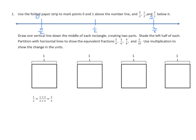You'll have some different fractional values with different denominators on your homework. The second part says: draw one vertical line down the middle of each rectangle, creating two parts. Shade the left half of each partition with horizontal lines to show equivalent fractions — 2 fourths, 3 sixths, 4 eighths, and 5 tenths. Use multiplication to show the change in units. When we're making a vertical line, we're going to go straight up and down, partitioning it into 2 halves as accurately as possible. Then it says to shade the left half, and that now represents 1 half.